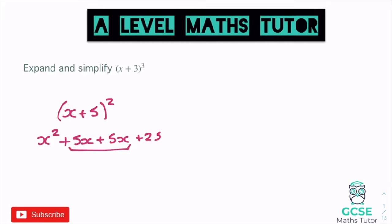Pascal's triangle is nice and easy to draw. We get a one at the top, then you add together the numbers either side to get the ones below. One at the top has zero either side, so we just have one and one below that. Then those two ones add to make two in the middle, giving us 1, 2, 1. We can keep following this process: always one on the outside, then 1, 3, 3, 1, and then 1, 4, 6, 4, 1.